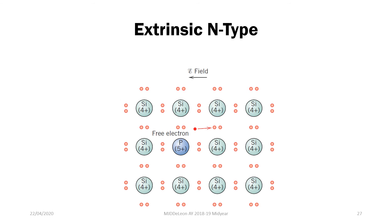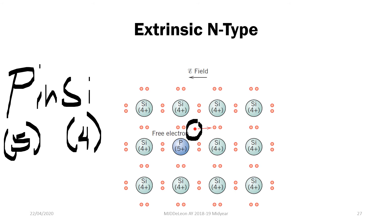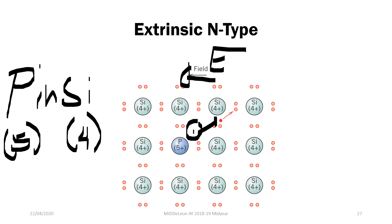For an extrinsic N-type semiconductor, we add an element that has more electrons than the host. For example, phosphorus in silicon: phosphorus has 5 valence electrons while silicon has 4. The addition of phosphorus, which has 1 extra valence electron, produces a free electron that is free to move about in the structure. When we apply an external electric field, the electron moves in the opposite direction to that field, creating a movement of charges leading to conduction.